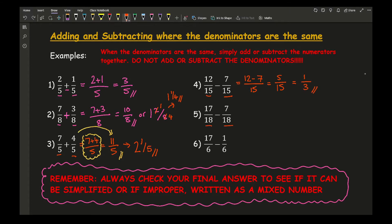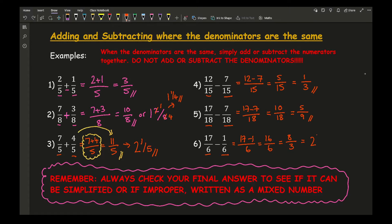For question 5, denominators are both 18. 17 take away 7 over 18 gives me 10 over 18, which simplifies to 5 over 9. For question 6, denominators are both 6. 17 take away 1 over 6 gives 16 over 6. I simplify first to get 8 over 3, then convert: how many 3s go into 8? That's 2 remainder 2, giving a final answer of 2 and 2 thirds.